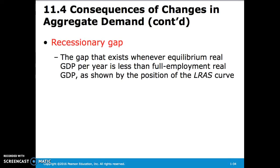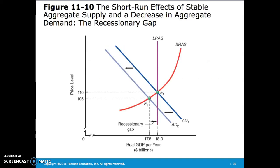A recessionary gap is the gap that exists whenever equilibrium real GDP per year is less than full employment real GDP, as shown by the position of the long-run aggregate supply curve. When aggregate demand shifts inward, in the short run our aggregate supply pushes the price level down and real GDP shifts, creating a recessionary gap between what it should be in the long run and what it is currently in the short run.